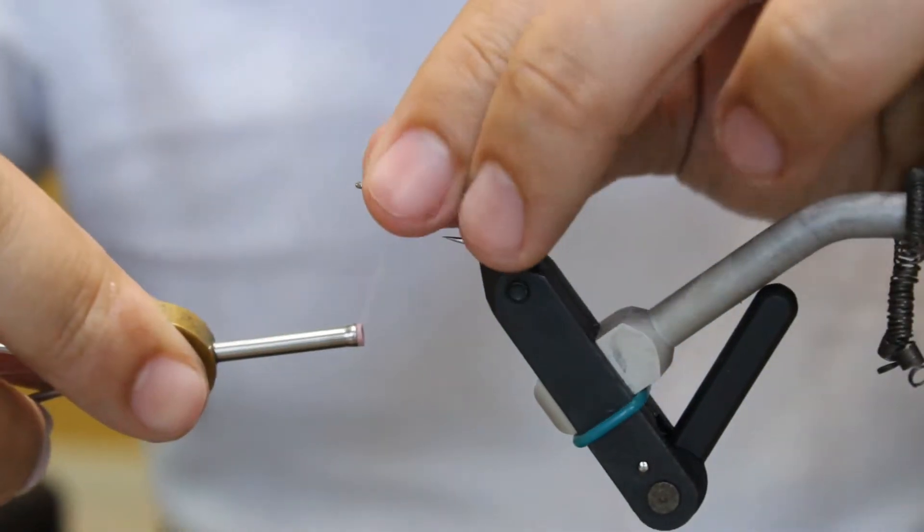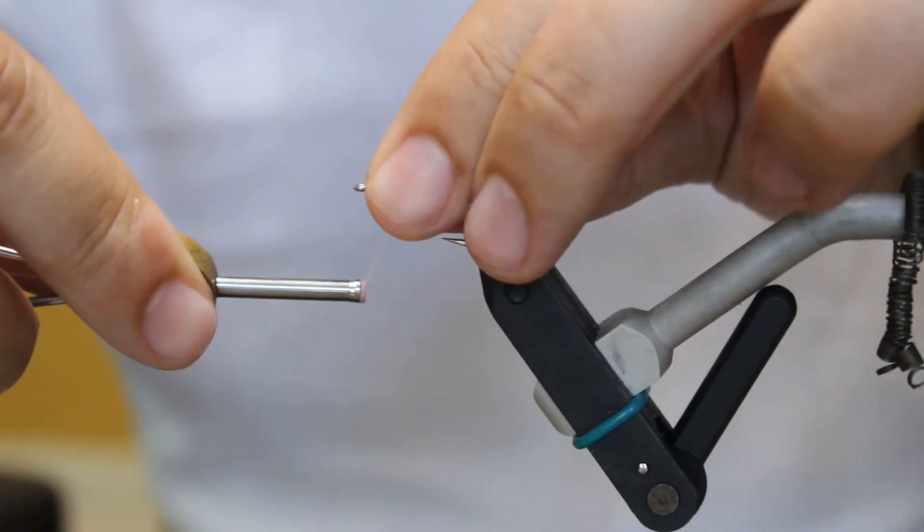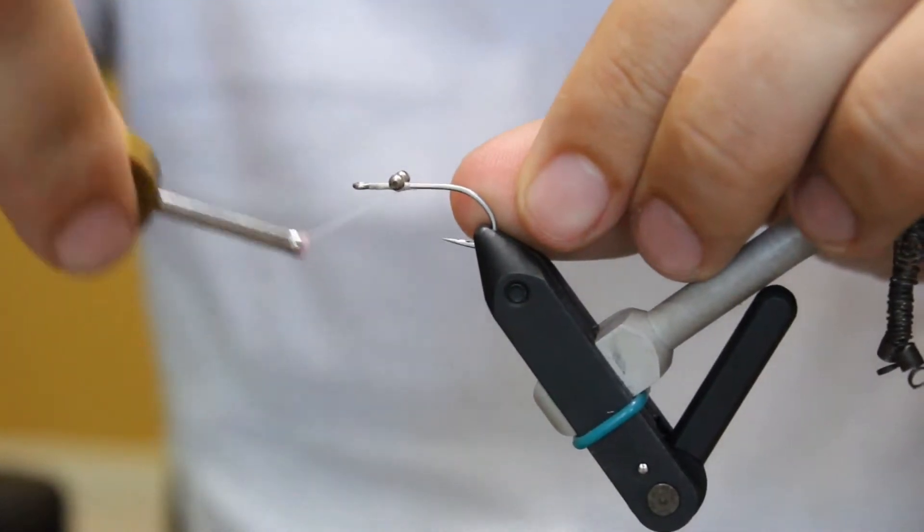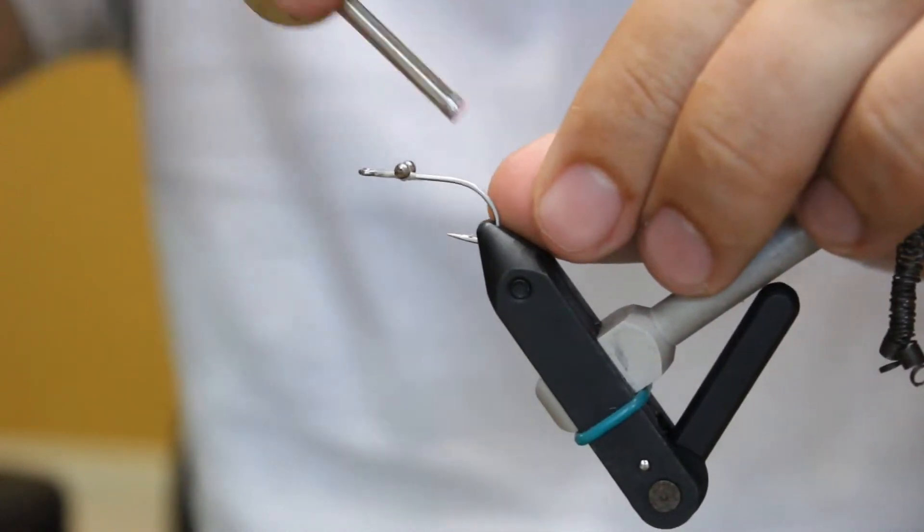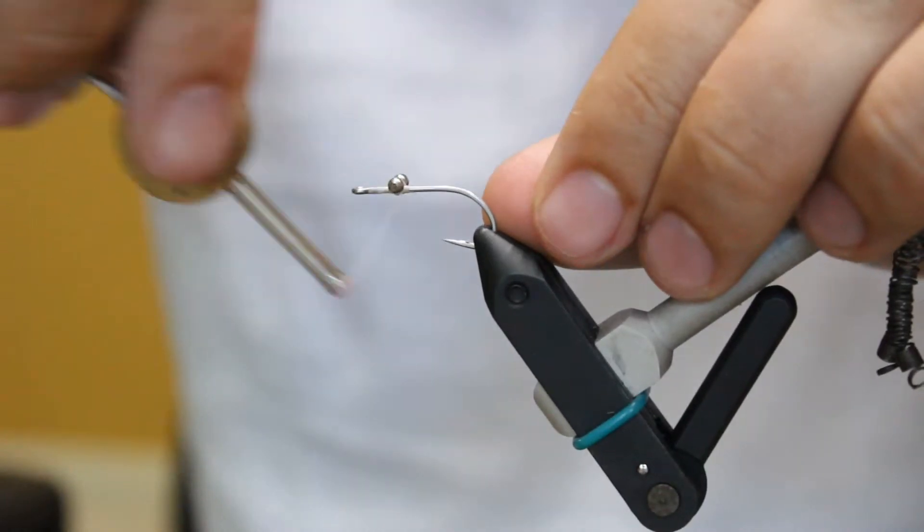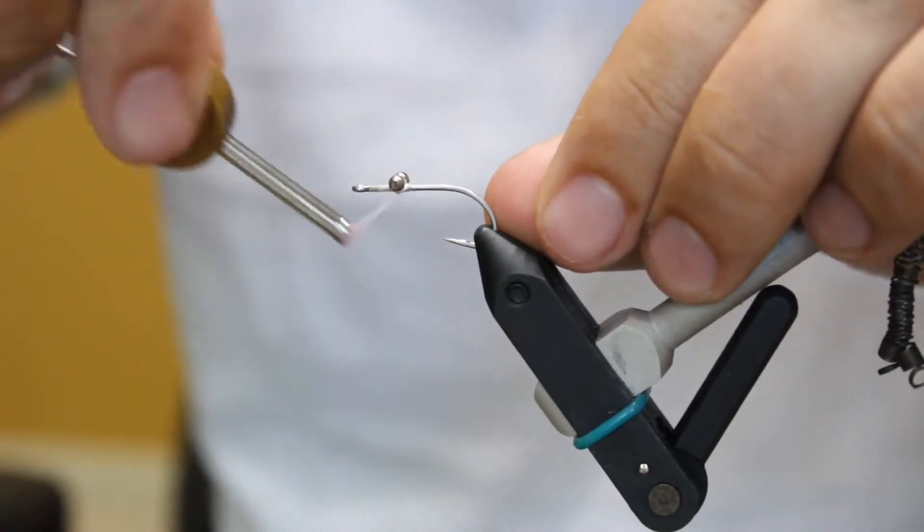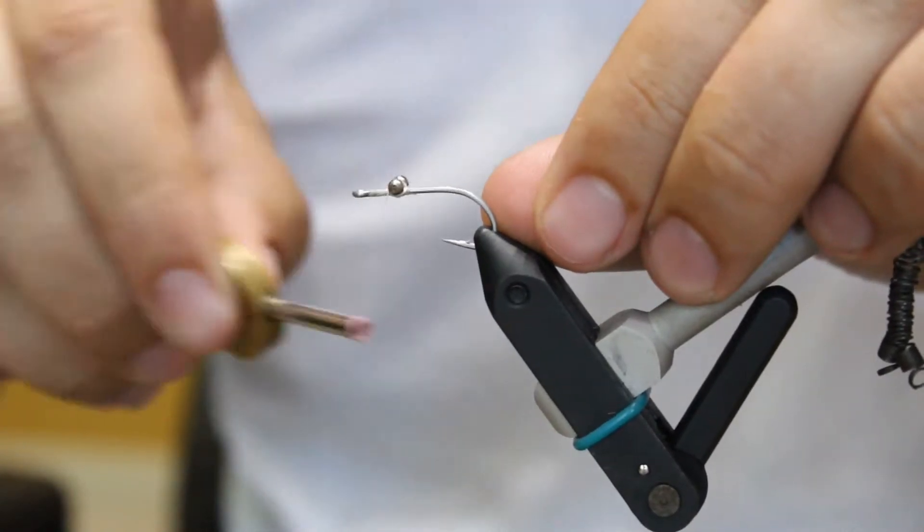And remember from our clouser minnow video, we're going to do some X wraps, then we're going to do some figure eights, and then we're going to go under both sides of it and finish it up with some over wraps.